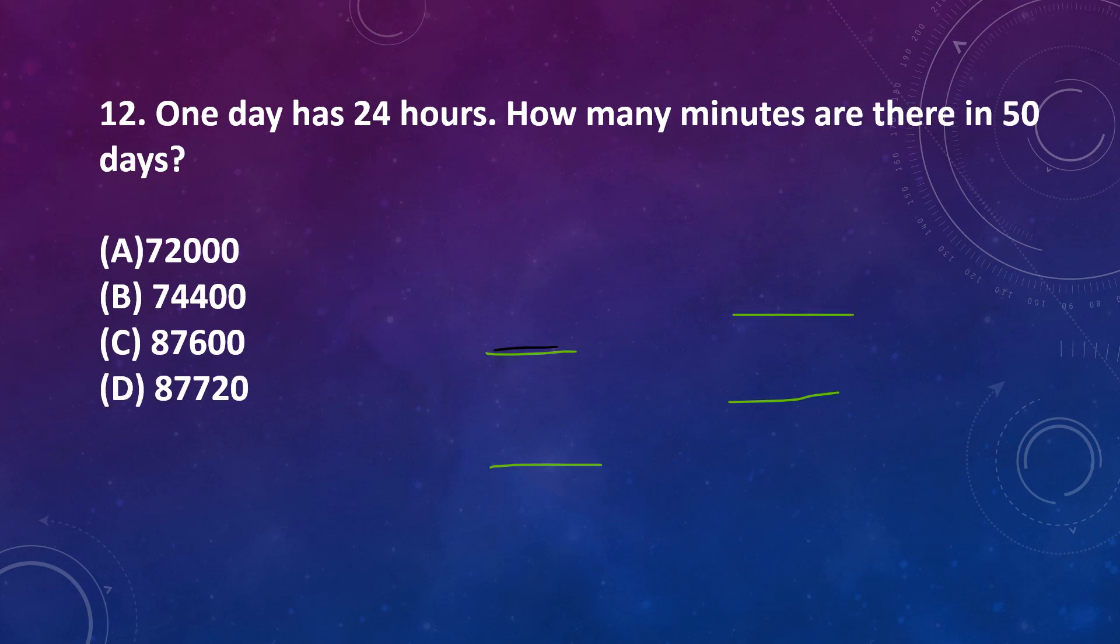Question number 12: One day has 24 hours. How many minutes are there in 50 days? First we find out how many hours are there in 50 days. That means 50 multiplied by 24 is 1200. There are 1200 hours in 50 days. And we know that in 1 hour, there is 60 minutes. So in 1200 hours, we will have 72,000 minutes. So correct answer is option A.